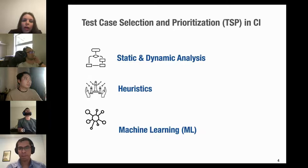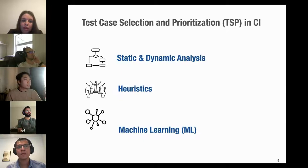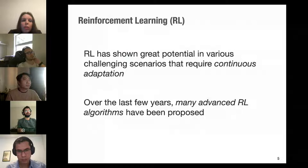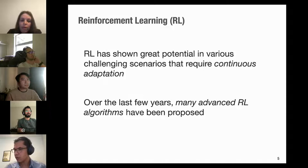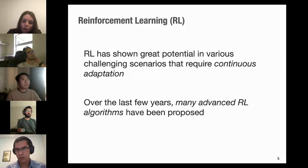There are several ways to apply test case prioritization to CI, such as static and dynamic analysis, heuristics, and machine learning. Our work focuses on machine learning techniques, specifically reinforcement learning. RL has recently been applied to challenging scenarios requiring continuous adaptation, similar to what we need for test case prioritization in the CI context. We also have many advanced RL algorithms proposed over the last few years that can increase the accuracy of our work.